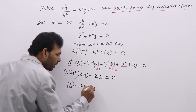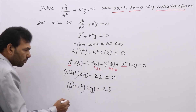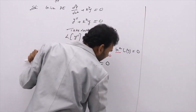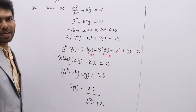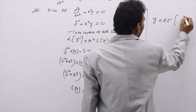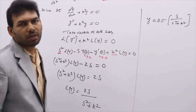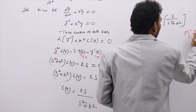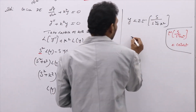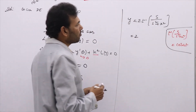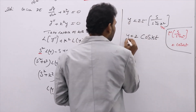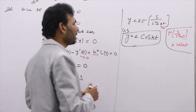Sending 2S to the RHS: (S² + K²)·L{y} = 2S, so L{y} = 2S/(S² + K²). Sending L to the RHS, Y = 2·L⁻¹{S/(S² + K²)}. Since L⁻¹{S/(S² + a²)} = cos(at), we get Y = 2·cos(Kt). This is the general solution of the given DE using Laplace transform.